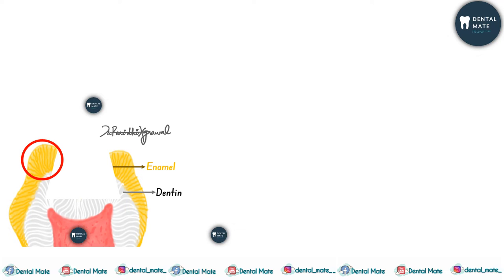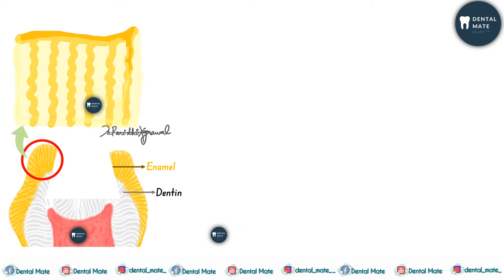When we prepare a tooth and cut the enamel, a smooth surface is obtained. In the zoomed view of the enamel surface we can see the enamel rods and the enamel matrix forming a smooth surface. Our aim is to convert this smooth surface into a rough surface so that certain tags are formed into which the composite resin can have a mechanical interlocking.